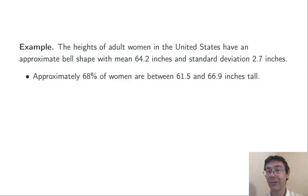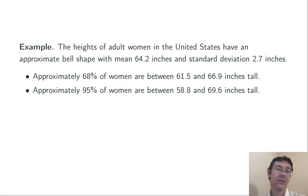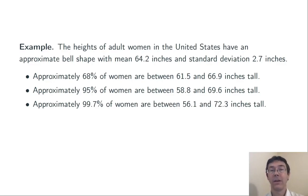We subtract 2.7 from 64.2 to get 61.5, and then add it to 64.2 to get 66.9. Similarly, if we go two standard deviations from the mean, we get 58.8 and 69.6. 95% of women, approximately, will lie in that range. And then going three standard deviations below the mean and above the mean, we get a range within which 99.7% of women will fall, approximately.